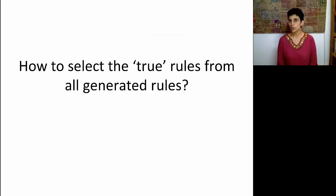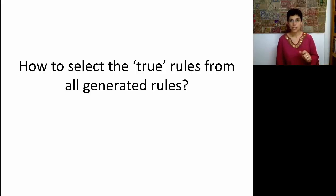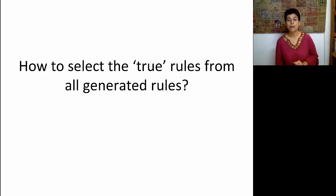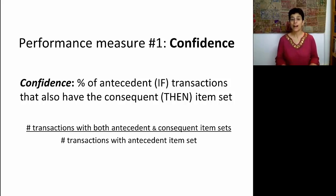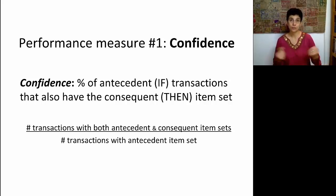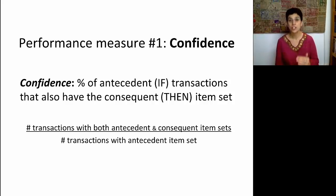Now the question is, once we've generated these rules, how do we pick the ones that are actually true — indicating relationships that are not random? We're going to talk about two particular measures that will help us pull out the useful rules. The first measure is called confidence. If support was simply the proportion of items in the whole database, in confidence we're looking at a conditional probability.